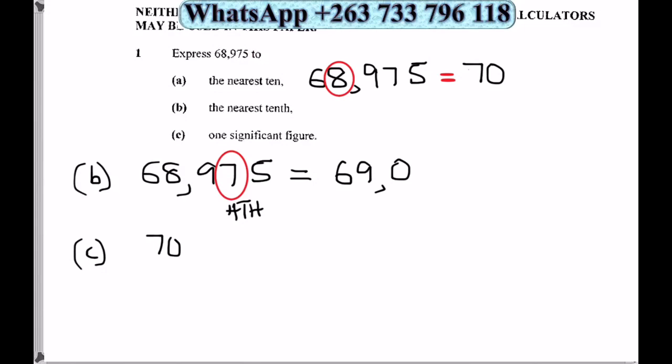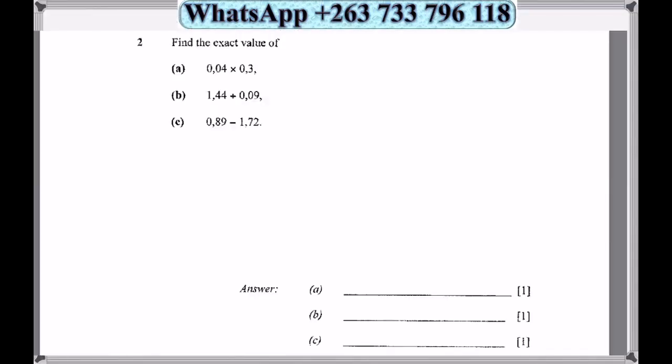Number 2: Find the exact value of 0.04 times 0.3. The trick is just to multiply 4 times 3 to give you 12, then count the total number of decimal places which is 1, 2, 3. So 4 times 3 is 12, number of decimal places is 3, so we count from the right to the left 1, 2, 3. We put a zero here as our third place: 0.012.